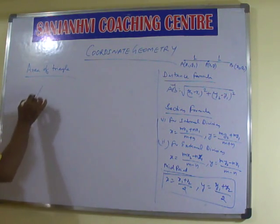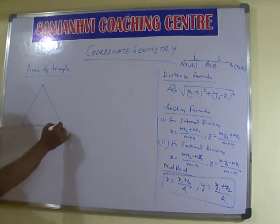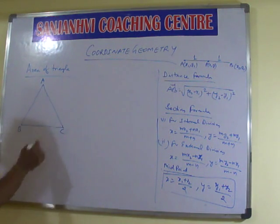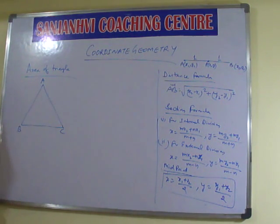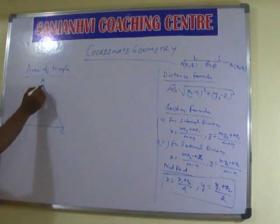So Rameshwar, I hope you already know what a triangle is. A triangle has three sides and three angles. Types of triangle: equilateral triangle has all sides equal, isosceles triangle has two sides equal, and scalene triangle has no sides equal. That part we are not going to discuss now.